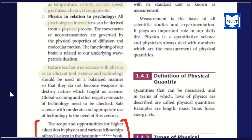And physics in relation to psychology — psychological interaction is a physical process. Neurotransmitters are physical properties of diffusion and molecular motion. So, the brain itself is, in a way, a physical problem.